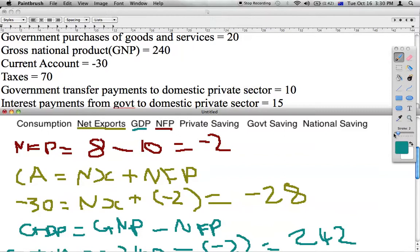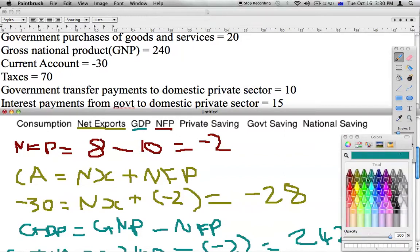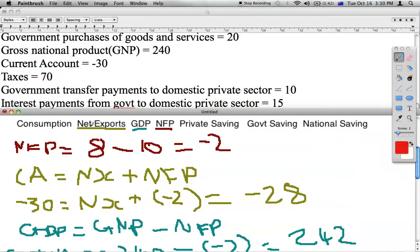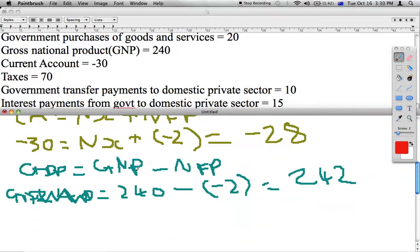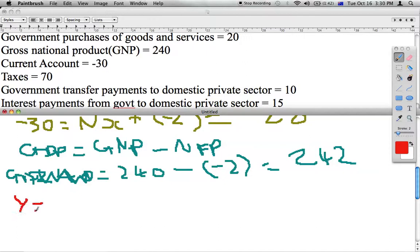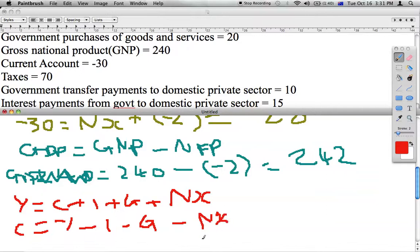Okay, next I would solve consumption, now that we have got GDP. So the formula I would use for this is Y equals C plus I plus G plus net exports. We can then rearrange this formula to get C on its own, so C equals Y minus I minus G minus net exports. We have I and we have G, it's in the data above.